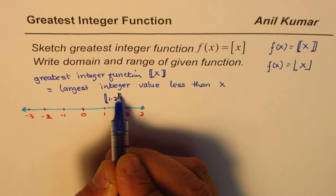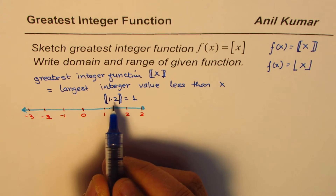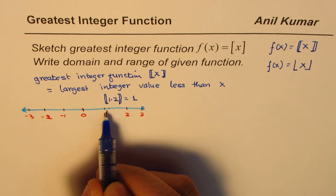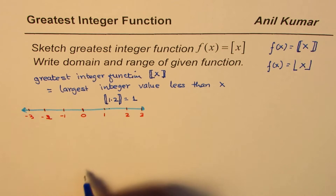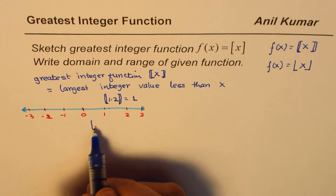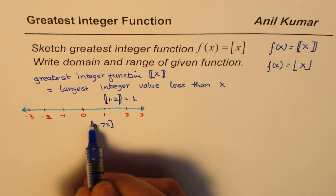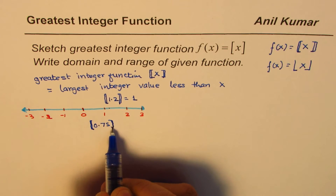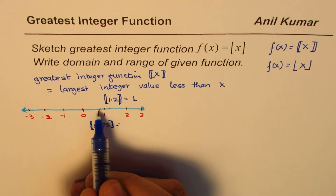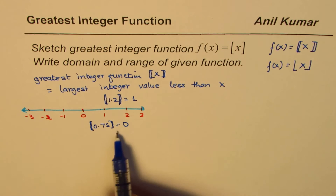The greatest integer value of 1.2 should equal the largest integer value less than or equal to this value, which is 1 — the integer on the left side. If I have a value like 0.75, it is right there on the number line and the integer on the left side is 0, so the greatest integer of 0.75 is 0.